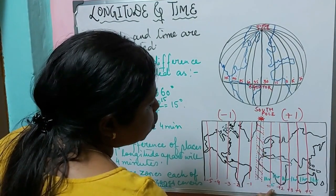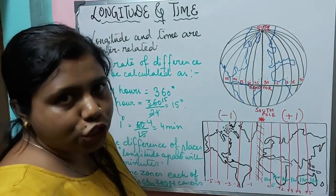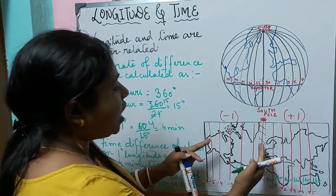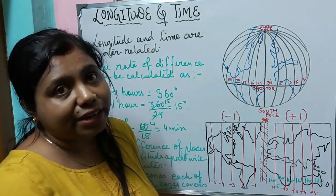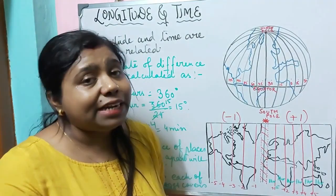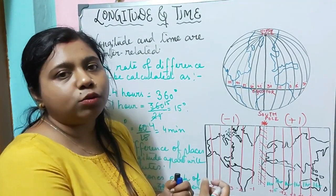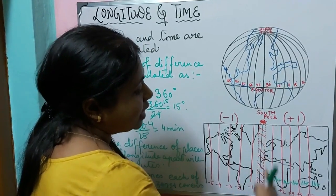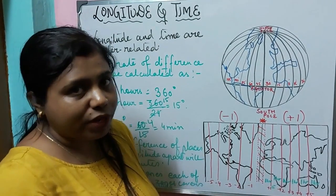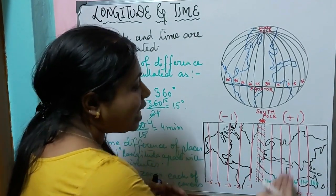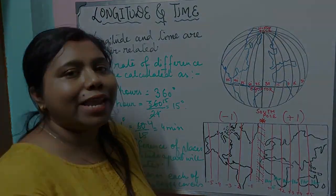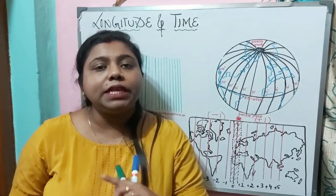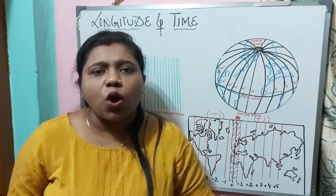As we move towards the eastern hemisphere, one hour is added; as we move towards the west, one hour is subtracted with each 15-degree longitude. Now let us understand what the time will be at 15 degree longitude. If it is 6 am at 0 degrees — that means at Greenwich — what will be the time at some degrees east and some degrees west? For example, if it is 6 am in London, what will be the time at 90 degrees east or 90 degrees west?